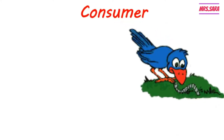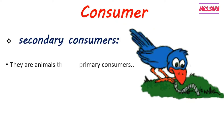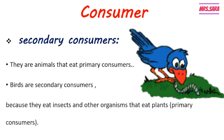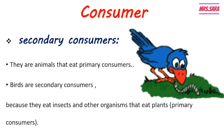The second type of consumer is secondary consumers. They are animals that eat primary consumers, like birds eating worms. Birds are secondary consumers because they eat insects and other organisms that eat plants, which are primary consumers. The secondary consumer feeds on the primary consumer.